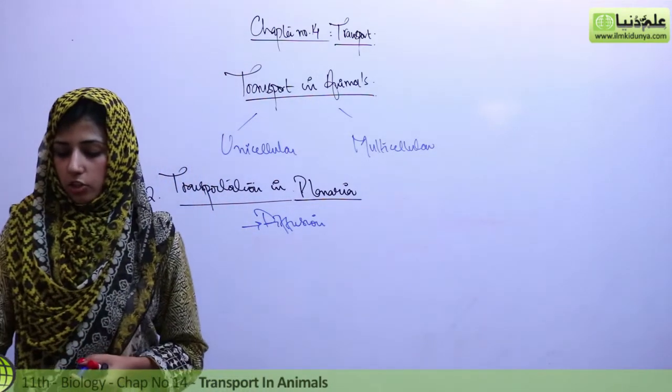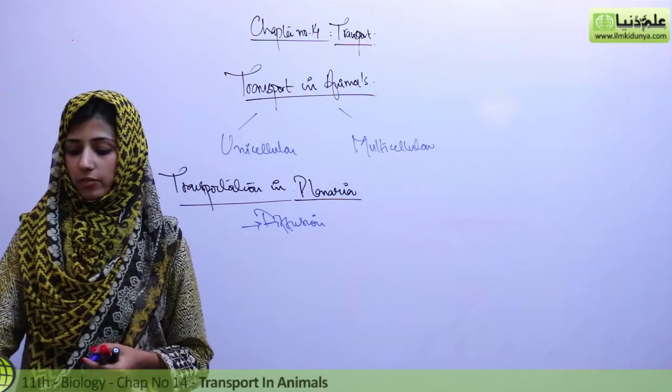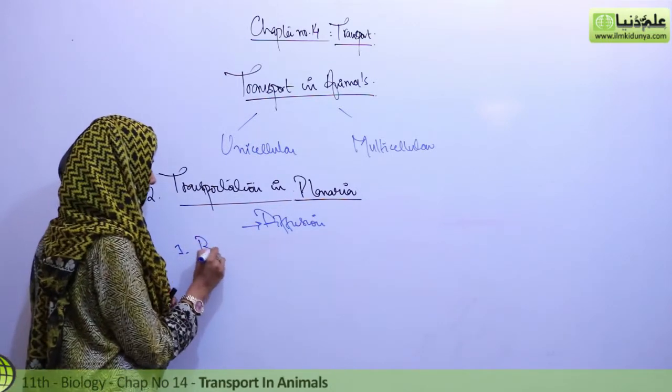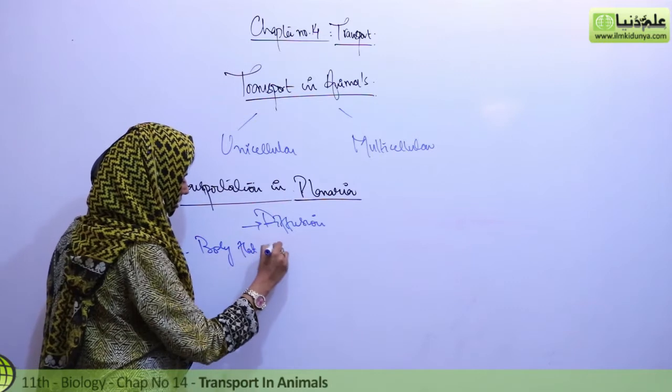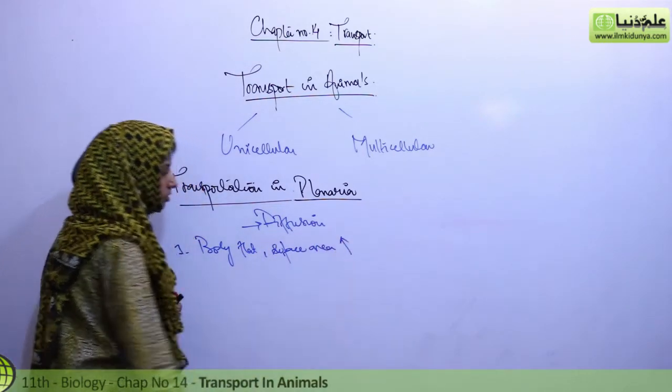No special transport system in planaria. Reasons: first of all body of planaria is very flat, body is flat and surface area is increased.